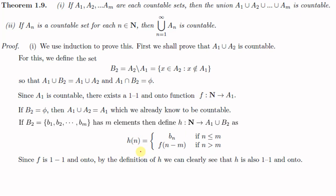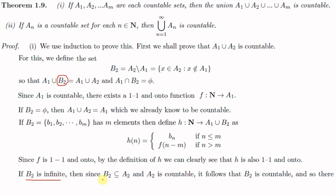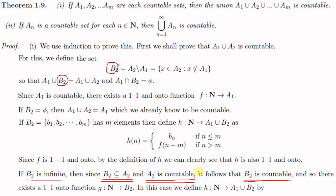Now the case where B2 is infinite. Since B2 ⊆ A2 and A2 is countable, by a previously discussed theorem it follows that B2 is countable. Since B2 is countable, there exists a one-to-one onto function g from ℕ to B2. We now need to show that A1 ∪ B2 is countable.